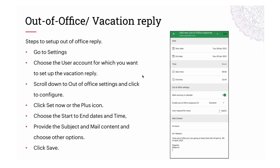To set up an out-of-office message from your mobile app, go to Settings, choose the user account, and select the start date, end date, time, and compose the message with the subject. You can customize the auto-response for every specific number of days and choose who to enable it for: Everyone, Non-Contact, or My Contacts. Once you set up the out-of-office message, save it and it will be functional.